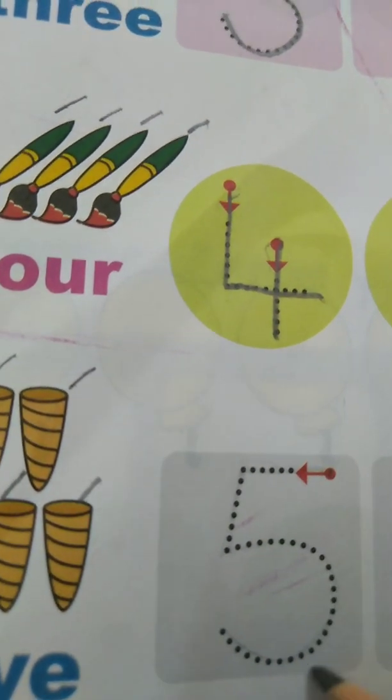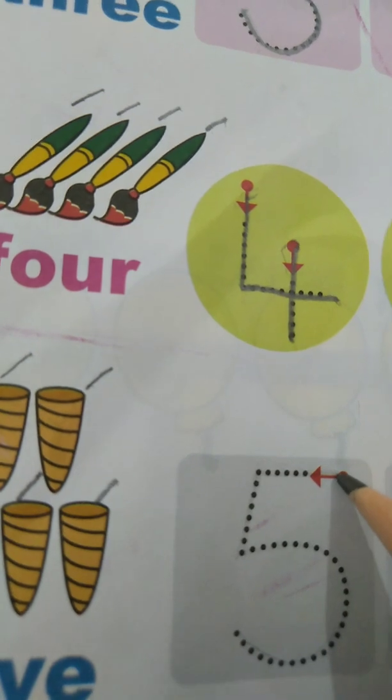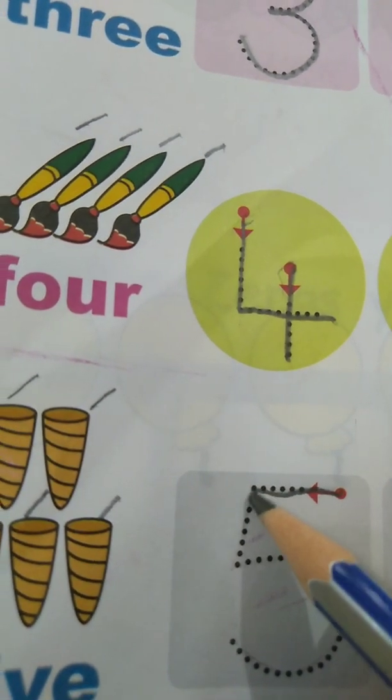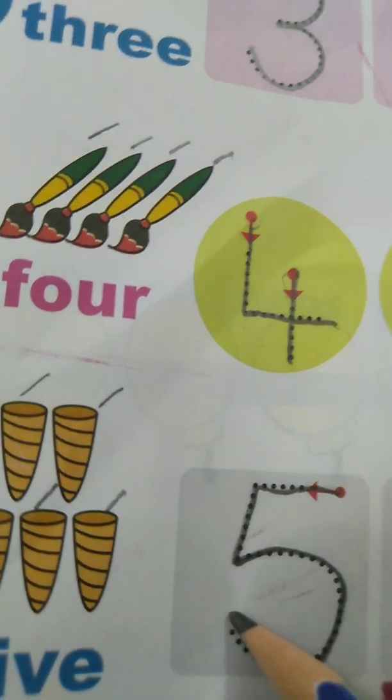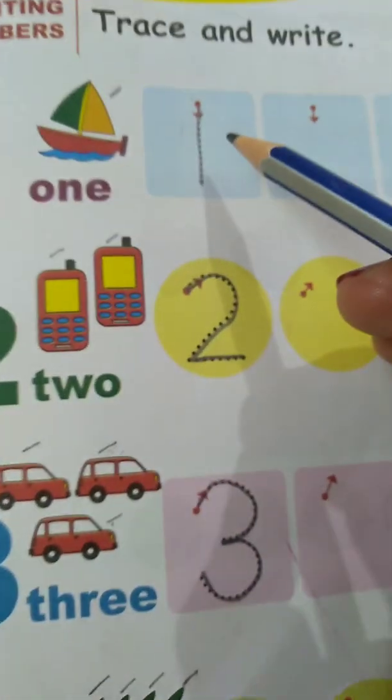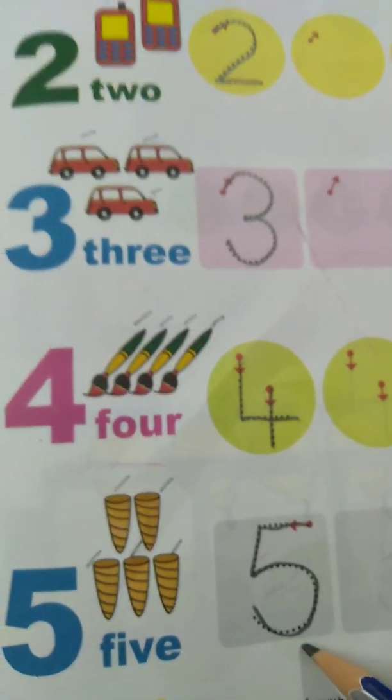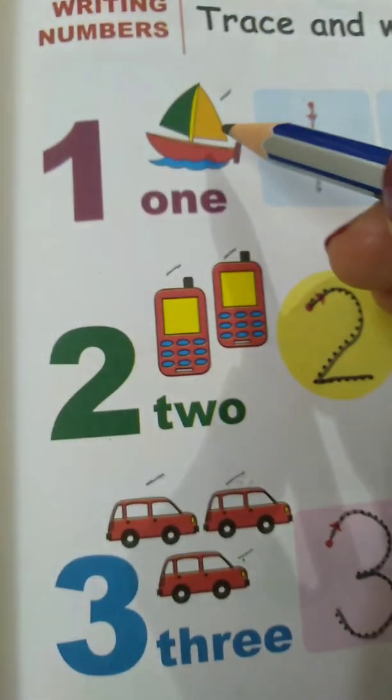Number 5 is a sleeping line, a slanting line and one curve. This is number 5. So kids, learn to write numbers from 1 to 5 and also count.